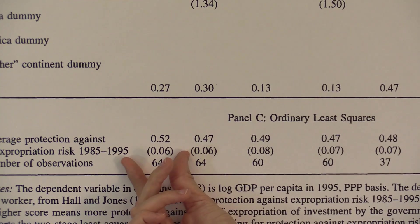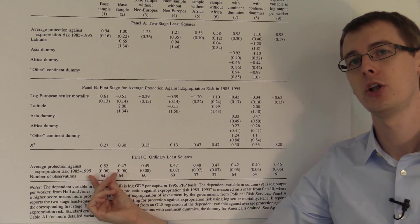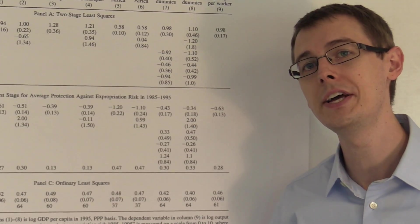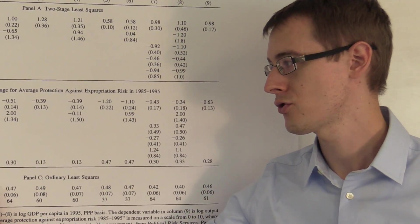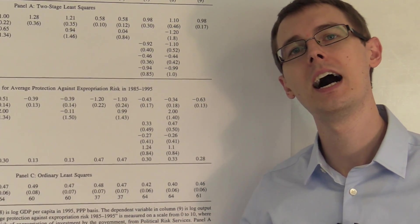So this is just telling us the regression that we looked at from before, that in the data there's a positive correlation between having strong property rights and having high GDP.